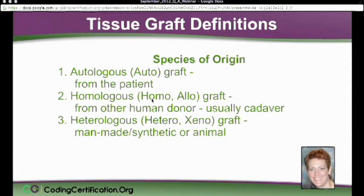And then the third type is the hetero or xenograft. And that could be like a man-made or synthetic type of graft and those are becoming more and more popular and you'll see the code selection growing and growing because of all the different types. And then there's the animal grafts. So hetero or xenograft and the codes in the CPT book are going to have those terms. It's important to understand that.